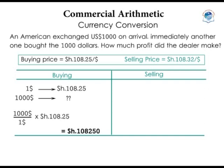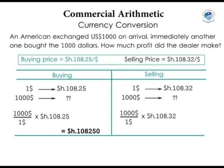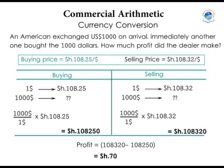Immediately, another client walks in wanting $1,000 — the same amount the dealer just bought. The dealer sells him the $1,000 at the selling price of 108.32 shillings per dollar, receiving $1,000 × 108.32 = 108,320 shillings. So the dealer's profit is 108,320 − 108,250 = 70 shillings from the same $1,000 transaction.